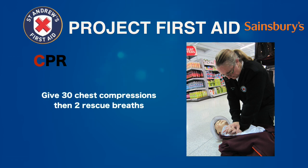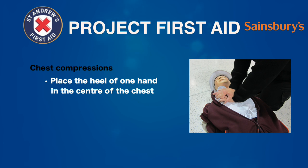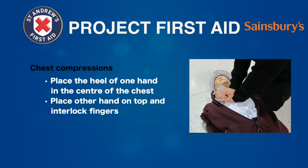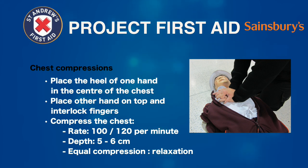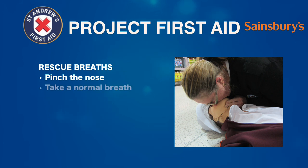Begin by giving 30 chest compressions, then 2 rescue breaths. To give chest compressions, kneel beside the casualty. Place one hand in the centre of the casualty's chest, place your other hand on top and interlock your fingers. Keeping your arms in a locked position, press down on the chest. Press about twice per second and down about 5 or 6 centimetres. Do this 30 times. Then move on to rescue breaths. Tilt the head back like when you were checking for breathing and pinch the nose. Look quickly into the mouth for any objects that might be causing an obstruction. Take a normal breath.